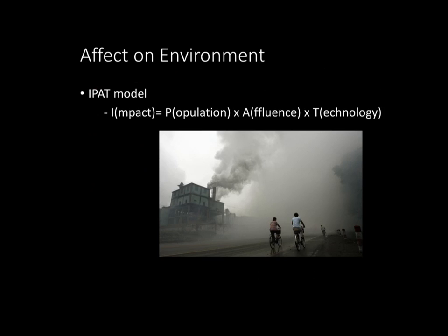Now let's look at the effect on environment. There's a model known as the IPAT model: I, or total impact, equals P (population) multiplied by A (affluence) multiplied by T (technology). You can find a population's general environmental impact by multiplying those factors. A good current example is China — a huge population becoming very wealthy very quickly. As middle-class Chinese people gain purchasing power, consumer goods use has increased dramatically, resulting in major environmental impact, as evidenced by China's significant pollution problem.